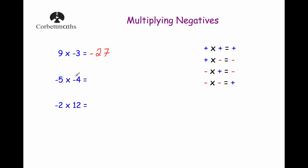Our next question is negative 5 times negative 4. A negative times a negative is equal to a positive, so we do 5 times 4, which is 20 — our answer is 20. And our last example: negative 2 multiplied by 12. It's a negative times a positive, so we've got one of each — the answer is negative. 2 times 12 is 24, so the answer is negative 24.